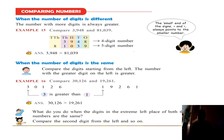We found that 81,039 is the greatest. But how do we represent this using a symbol? We use the crocodile mark to represent the greatest number — the crocodile mark opens towards the greatest number. So in the answer, you write: 3,948 is less than 81,039, or in other words, 81,039 is greater than 3,948.